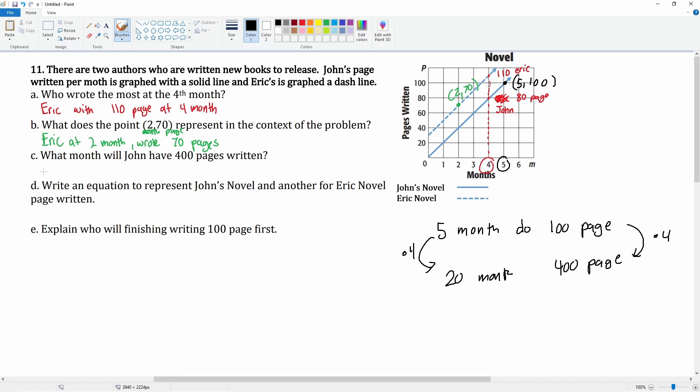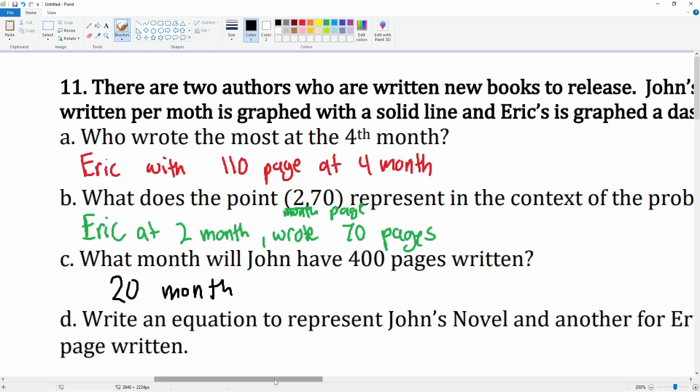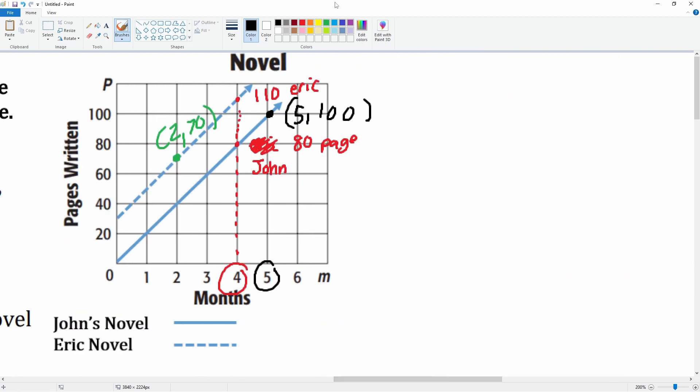Okay, it says write an equation to represent John's novel and Eric's novel pages written. Well, we have to find their slopes to do this. Okay, so let's do John's first. For John, the b-value starts at zero, and it looks like for every single month, m is equal to 20 pages over one month. So John's equation is y equals 20x